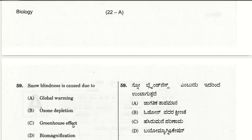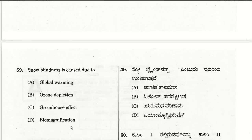The fifty-ninth question: snow blindness is caused due to ozone depletion — not global warming, the greenhouse effect, or biomagnification.